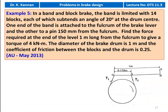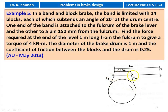Example number 5, from the May 2013 question paper. In a band and block brake, the band is lined with 14 blocks, each of which subtends an angle of 20 degrees at the drum center. One end of the band is attached to the fulcrum of the brake lever and the other to a pin 150 millimeter from the fulcrum. Find the force required at the end of the lever, 1 meter long from the fulcrum, to give a torque of 4 kilonewton meter. The diameter of the brake drum is 1 meter and the coefficient of friction between the blocks and drum is 0.25.